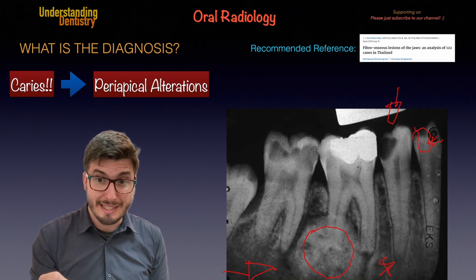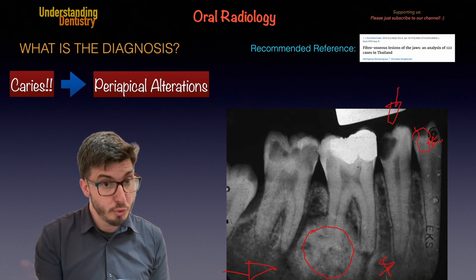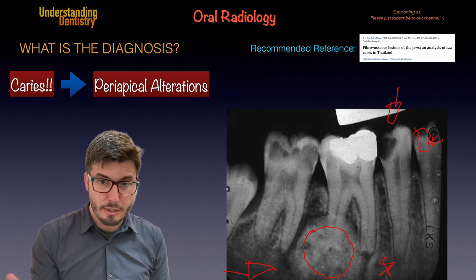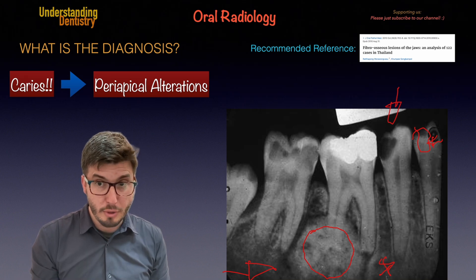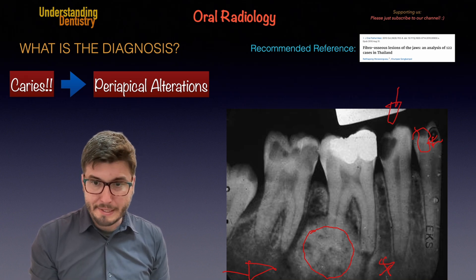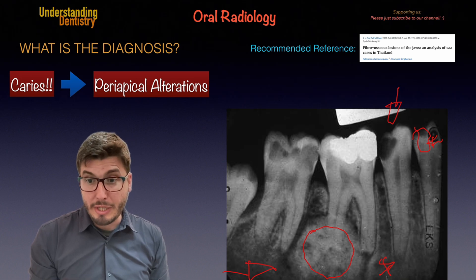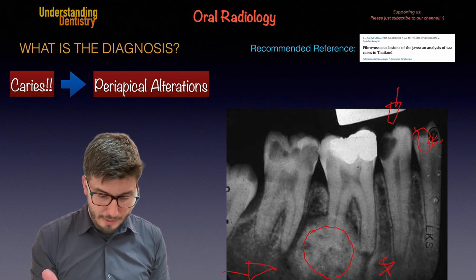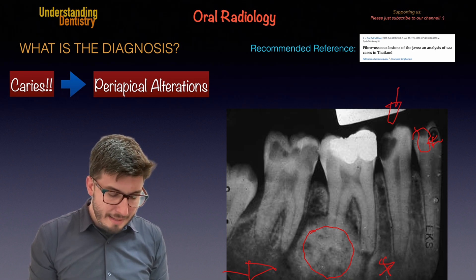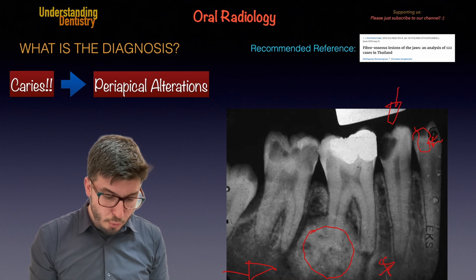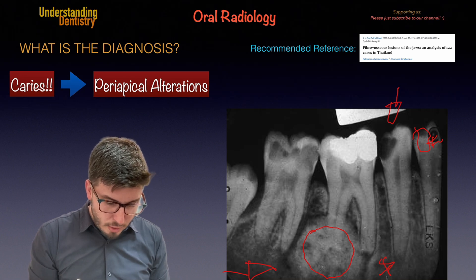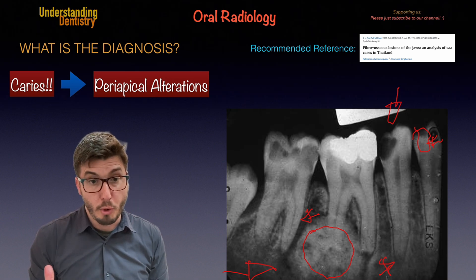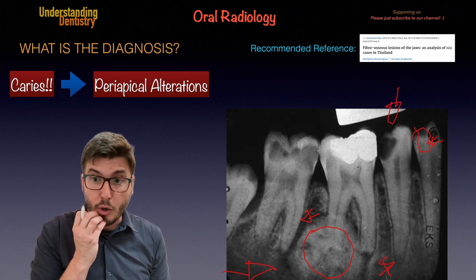Don't forget to mention that this lesion is superimposed on the roots. So now we cannot see the lamina dura, the periodontal ligament space, or the rest of the shape of the distal root of this first molar. The lesion is symmetric and round. We might also have a little bit of root resorption, and this is also causing resorption of the lamina dura of the mesial root of the second molar.